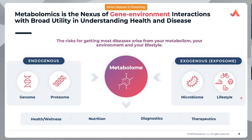Metabolomics is the final measurement in the central dogma, capturing what has happened in the genomics, transcriptomics, and proteomics spaces by measuring the final product of all those reactions — the metabolome. It also captures the exogenous component that impacts a biological system, including lifestyle choices, the microbiome — this forgotten organ we'll discuss in detail today — and how all those aspects impact a biological system.